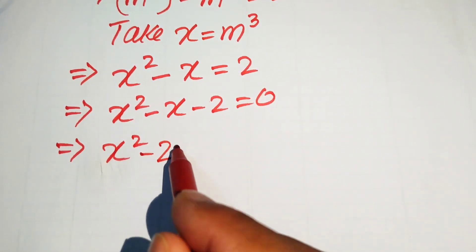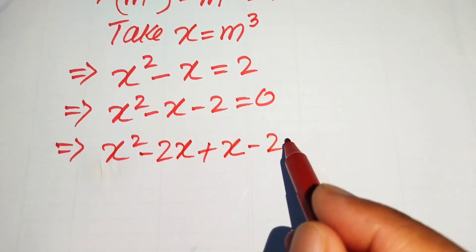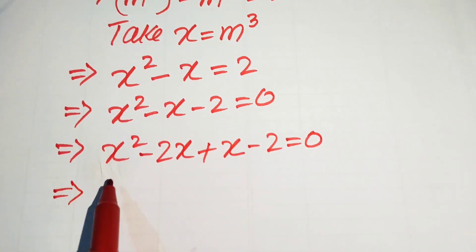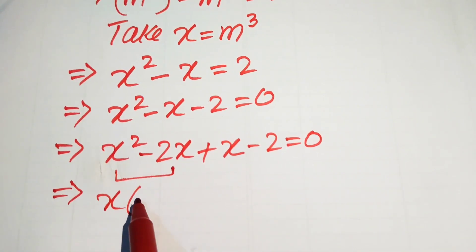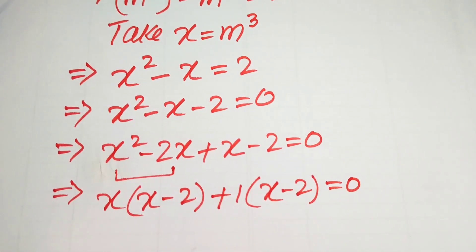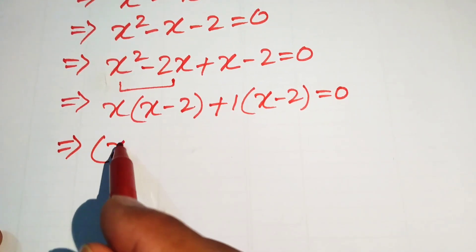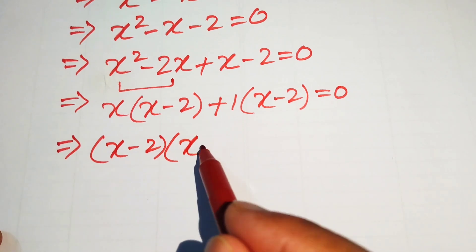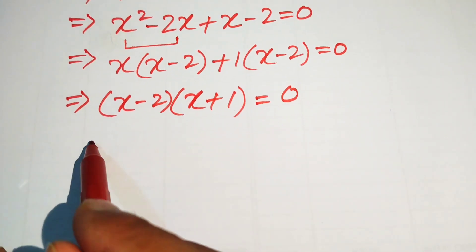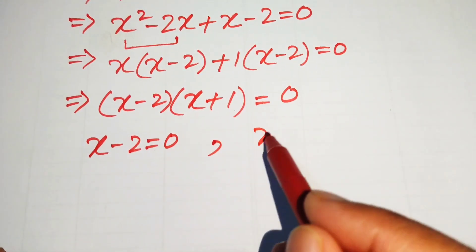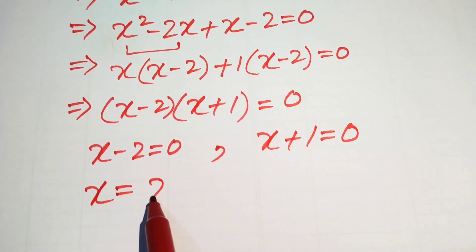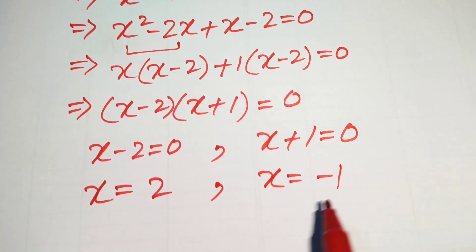Those numbers give us x squared minus 2x plus x minus 2 equals to 0. We take common x from the first two terms to get x(x minus 2), then take common plus 1 to get (x minus 2)(x plus 1) equals to 0. This gives two cases: x minus 2 equals to 0, giving x equals to 2, and x plus 1 equals to 0, giving x equals to minus 1.